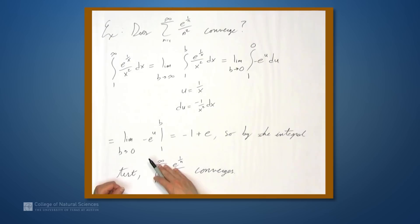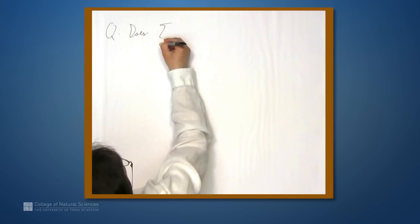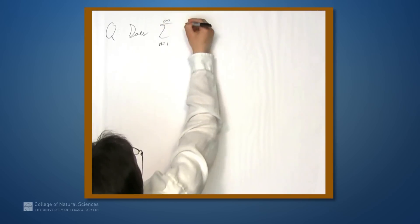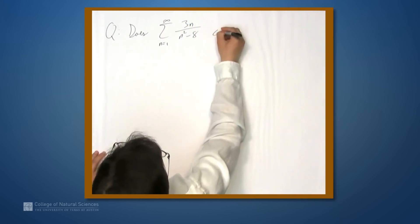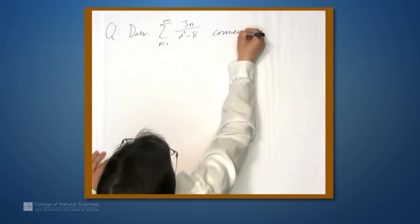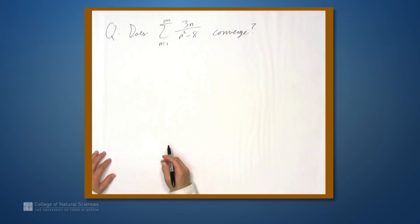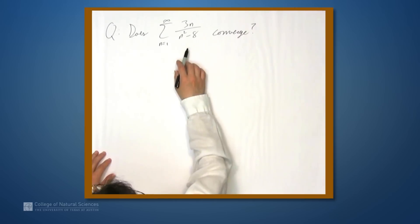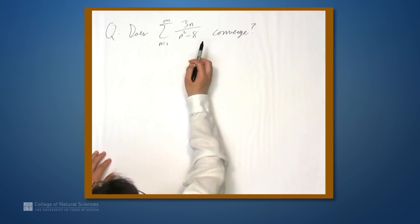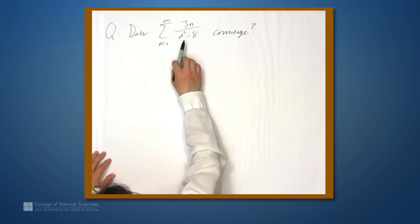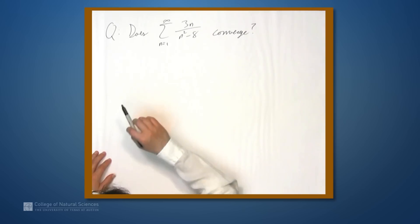I'll leave you with a question: does the series from n equals 1 to infinity of 3n over n squared minus 8 converge? This looks a lot like the first example we did, except instead of n squared plus 8, it's n squared minus 8. Think about how, if at all, you can apply the integral test to determine whether or not this series converges.